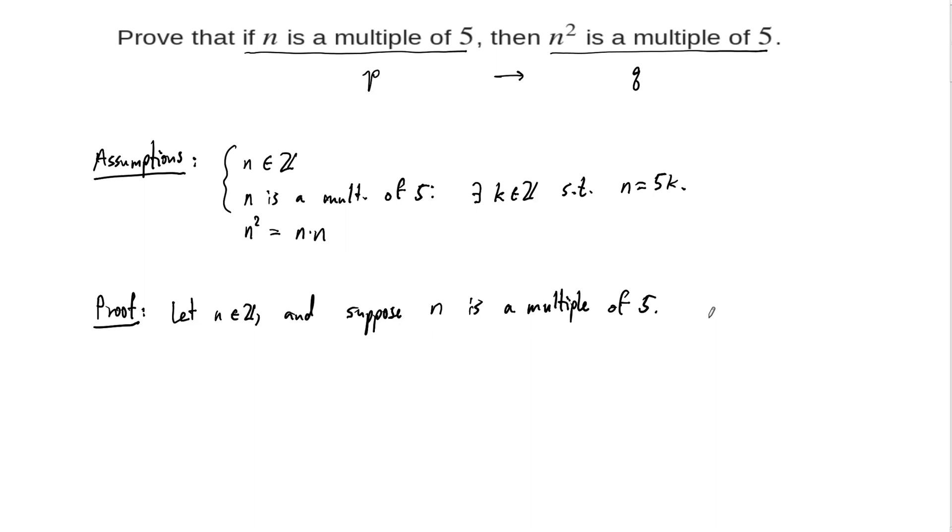And now from this point, we're going to use our definitions, our assumptions, and we're going to use logical arguments to arrive at the conclusion. So the next sentence I'll write is, since n is a multiple of 5,